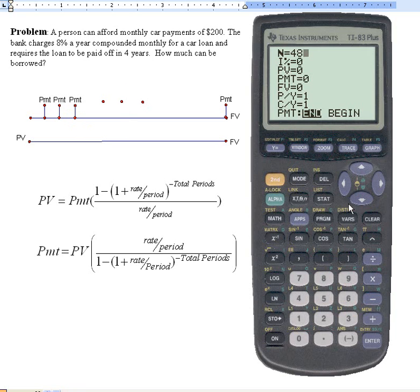So 48 will be the number of payments in the term. The interest rate is 8%, the present value is what we're looking for, but our payments, we want to pay out $200 a month. I should enter this as a negative number, we're going to pay it out. The future value should be zero, we're paying off the loan, and the payments per year and the compounding period, we're doing all these things monthly, so we'll set both of these to 12.